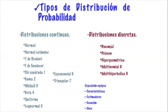Los tipos de distribución de probabilidad son dos: continuas y discretas. Para las continuas tenemos: la normal, la normal estándar, la T de Student —la normal es para poblaciones mayores a 30, mientras que la T de Student es para muestras más pequeñas—, la F de Snedecor o de Fischer, la chi cuadrada, la gamma, la Weibull, la beta, la uniforme, la log-normal, la exponencial y la triangular.